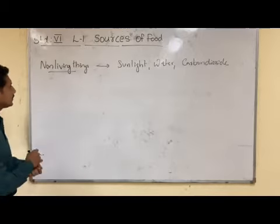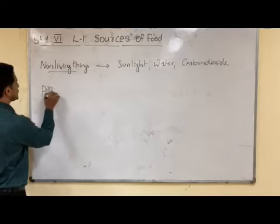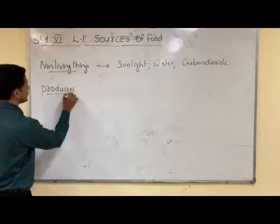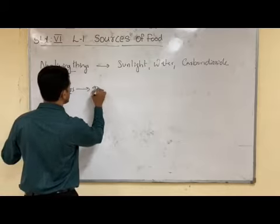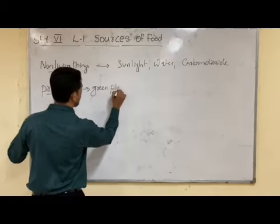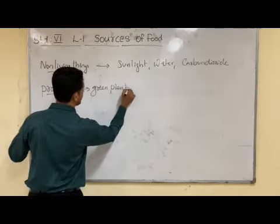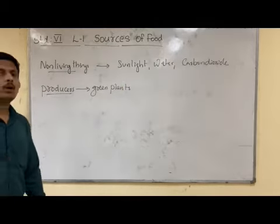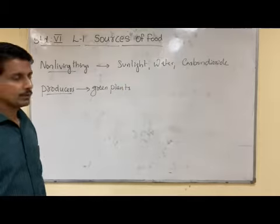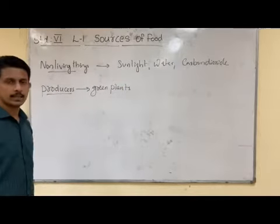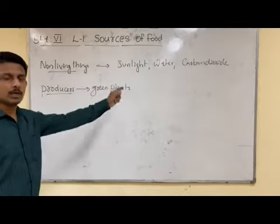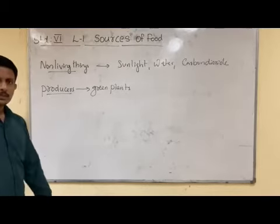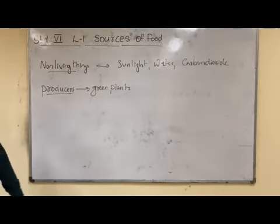So these green plants are commonly known by one name — producers. They produce their own food with the help of non-living things like sunlight, water, and carbon dioxide. So these green plants are known as producers.